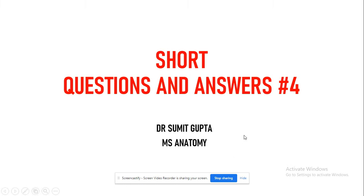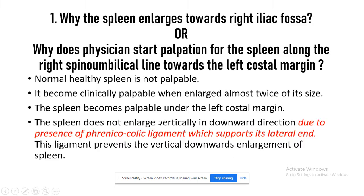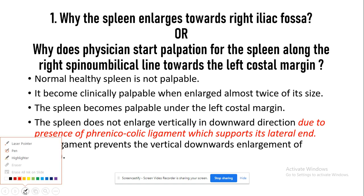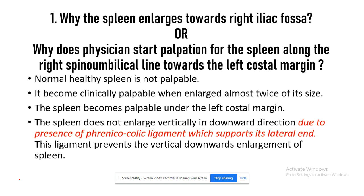Today we'll discuss the short question-answer part 4. The first question is: why does the spleen enlarge towards the right iliac fossa? Another way of asking this question is: why does the physician start palpation for the spleen along the right spinoumbilical line towards the left costal margin?